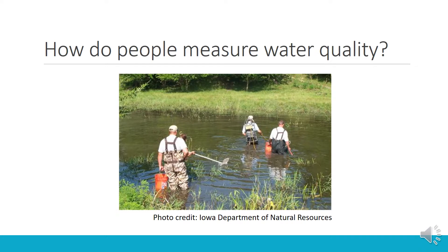Water quality is frequently monitored using chemical constituents, or the chemical makeup of water. Certain toxic chemicals, such as mercury and lead, are only allowable below certain levels as they are dangerous to human health. Chemicals can come from many sources, including pesticides, fertilizers, old infrastructure, and urban runoff.